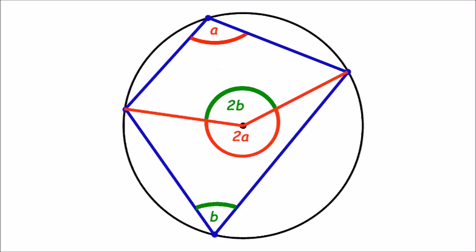Angles around a point add up to 360 degrees. So we can say that 2a plus 2b equals 360 degrees. Therefore, a plus b equals 180 degrees. And so we have proven our theory that the sum of opposite angles of a cyclic quadrilateral is 180 degrees.